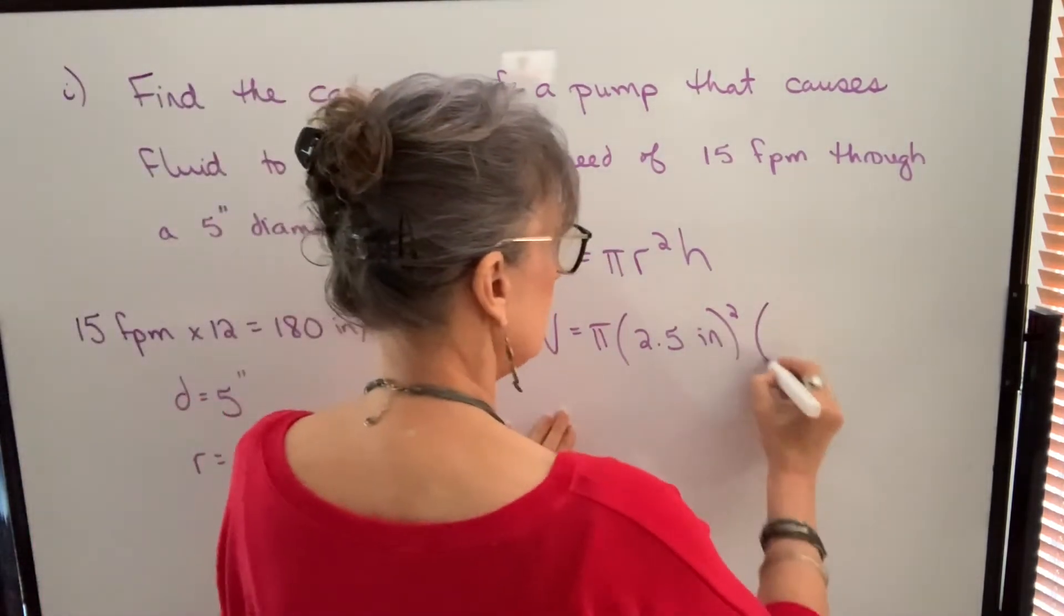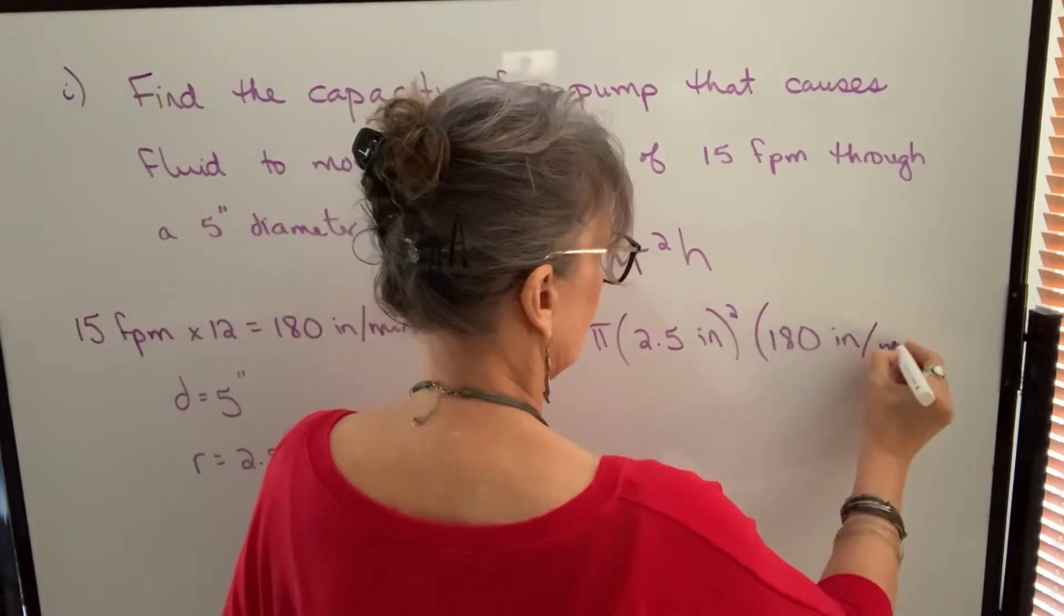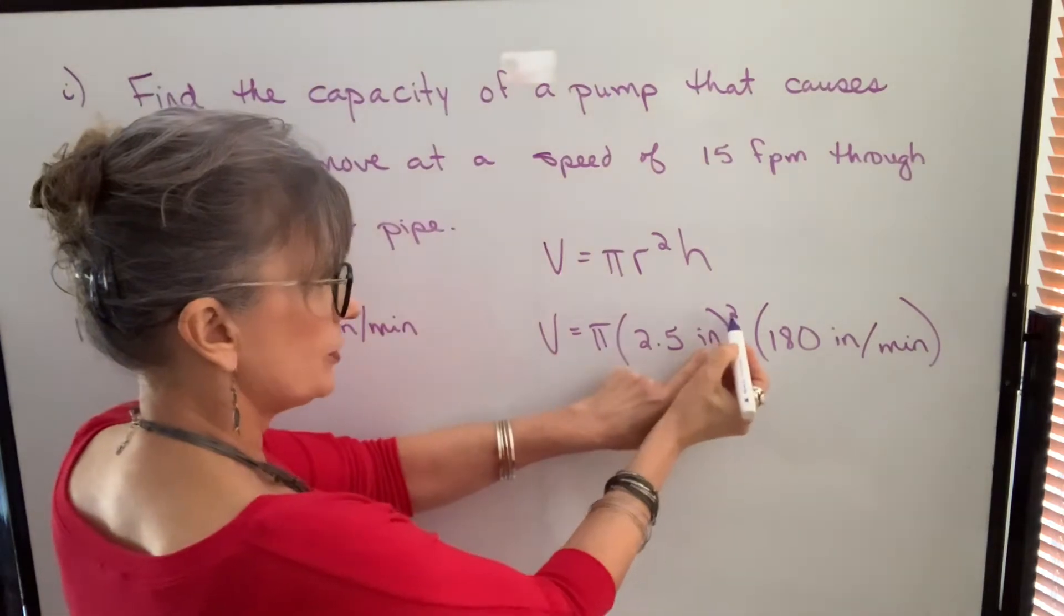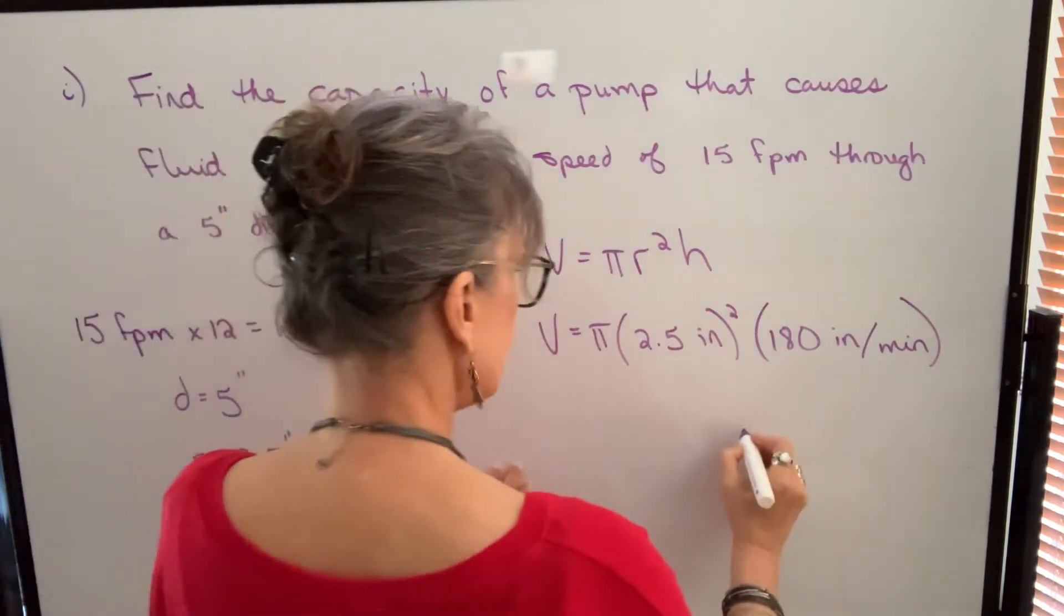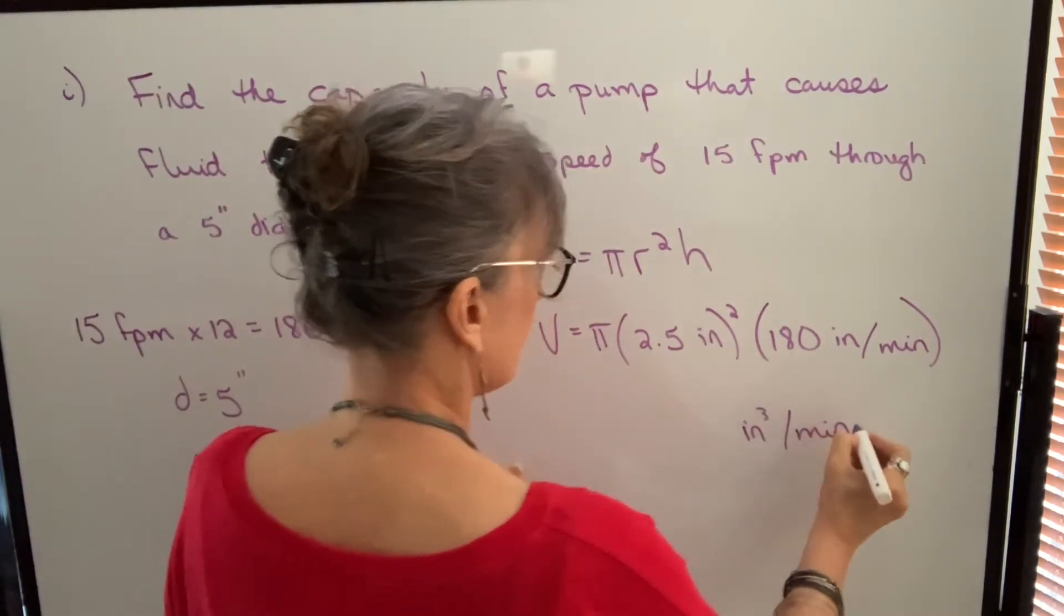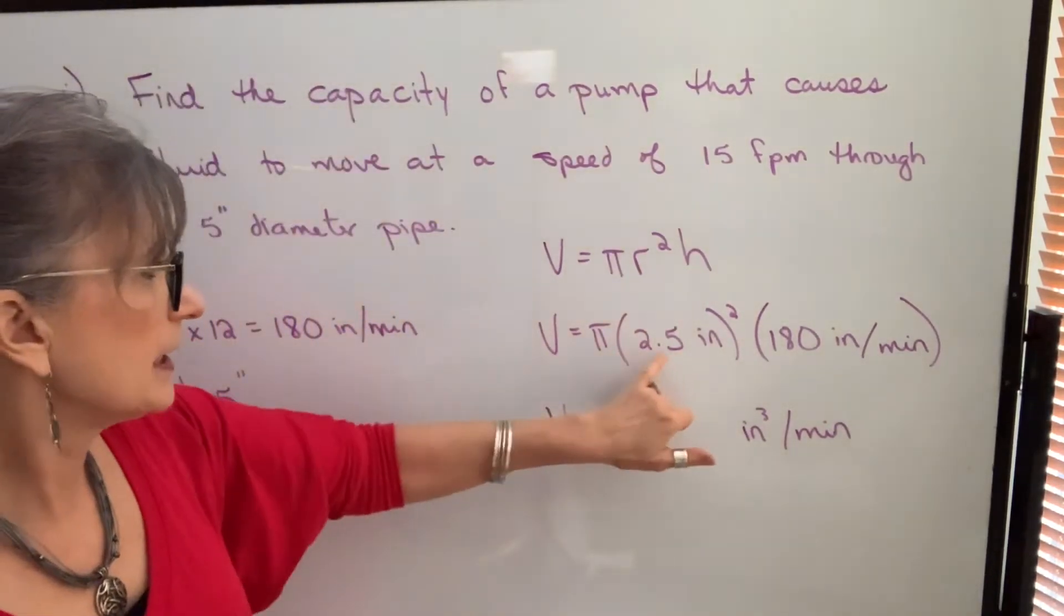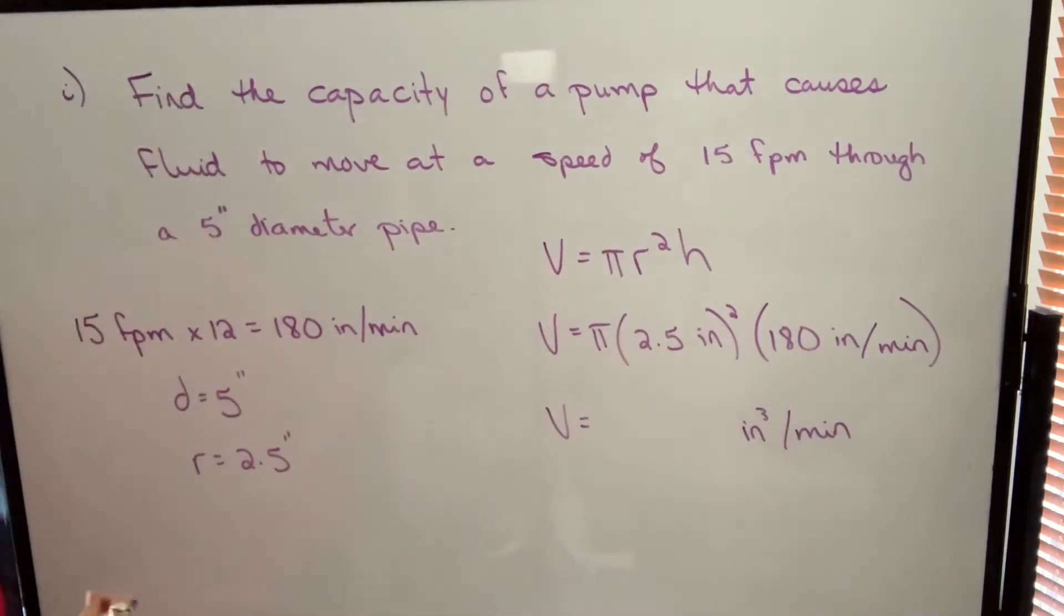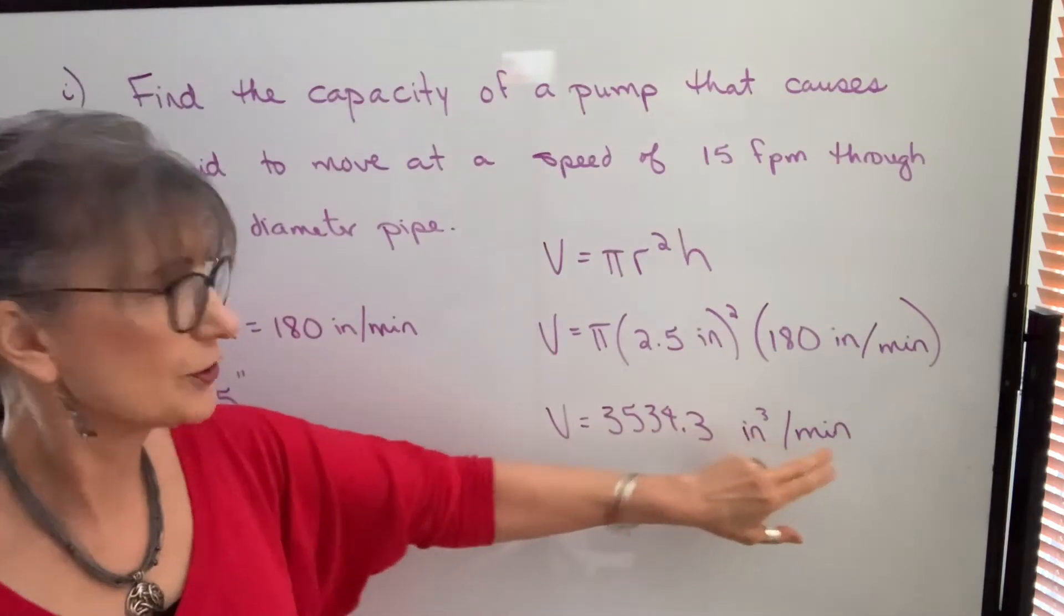So there's a total distance or height of 180 per minute. So here this gives us square inches times inches gives us cubic inches and our time factor is per minute. So we're going to end up with cubic inches per minute as an answer. So we multiply pi times 2.5 times 2.5 times 180 and we get 3534.3 cubic inches per minute.